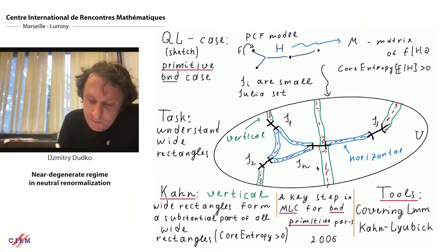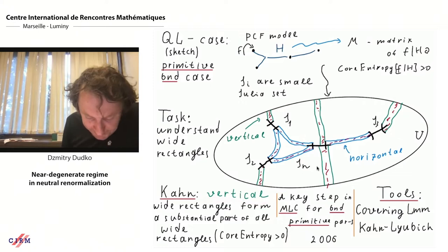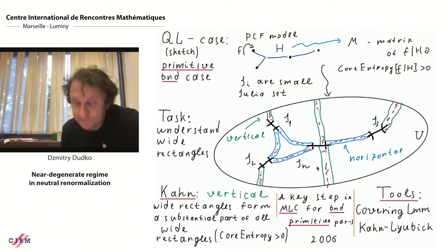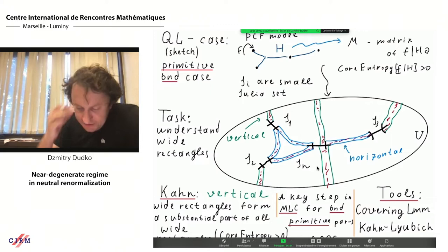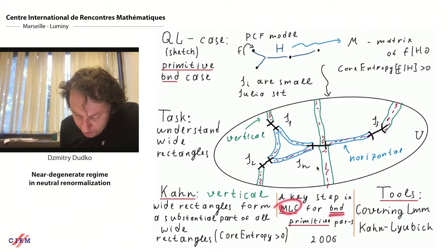The correct statement is that vertical thin rectangles must form a substantial part of all thin rectangles — horizontal rectangles cannot dominate. This is a key step in Jeremy Kahn's argument for MLC for bounded primitive parameters.